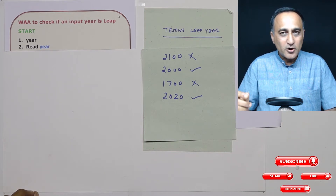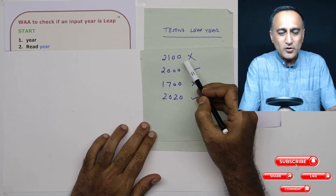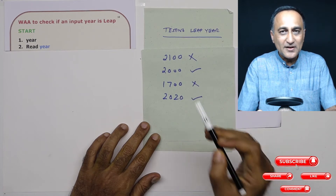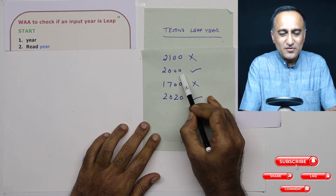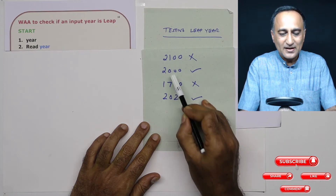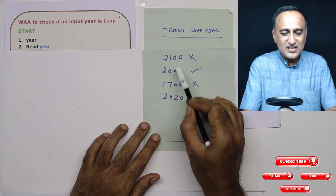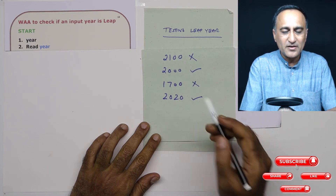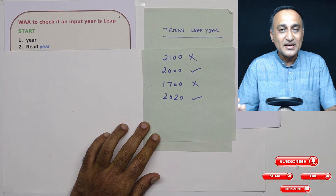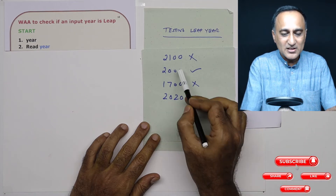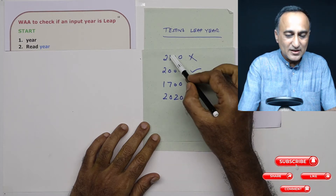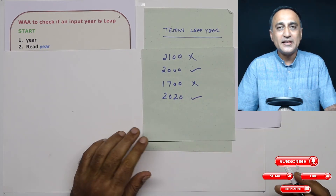In order to correct this approximation, we don't treat every century year as a leap year. Only if the century year is divisible by 400 do we treat it as a leap year. So years like 2100 are not divisible by 400 — if you divide 2100 by 400 the remainder is 100 — whereas if you divide 2000 by 400 the remainder is zero. That's why years like 2100 and 1700 are not leap years.